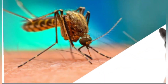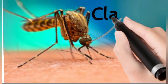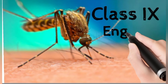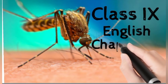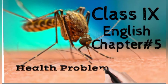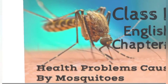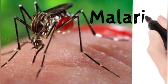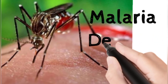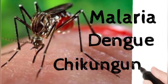Assalamu alaikum students, I hope you all are doing well. Today I am going to explain the new chapter from your English book — chapter number five: 'Health Problems Caused by Mosquitoes'. In this chapter we are going to study about the diseases malaria, dengue, and chikungunya.